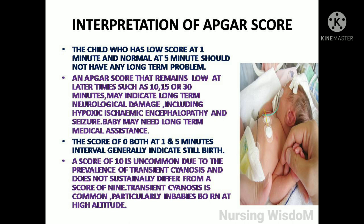An APGAR score that remains low at later times such as 10, 15, and 30 minutes may indicate long-term neurological damage, including hypoxic ischemic encephalopathy and seizure, and the baby may need long-term medical assistance. A score of 0 at both 1 and 5 minutes generally indicates stillbirth. A score of 10 is uncommon due to the prevalence of transient cyanosis and does not substantially differ from a score of 9. Transient cyanosis is especially common in babies born at high altitude.